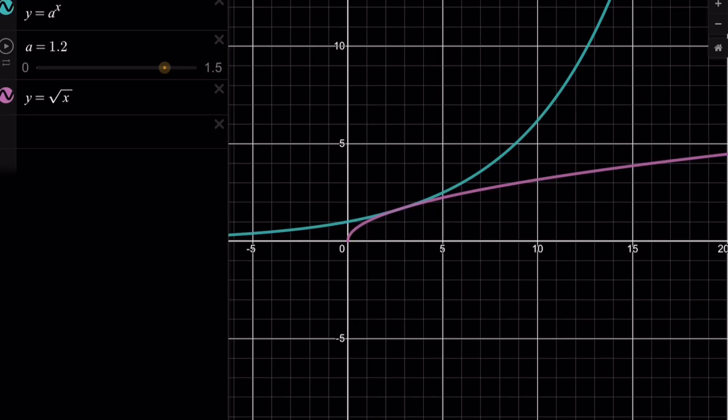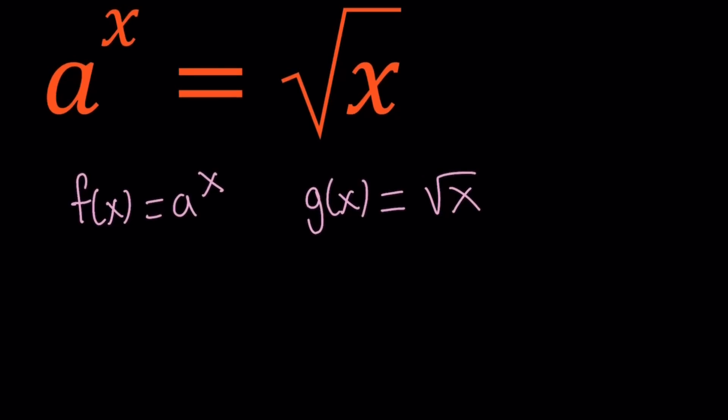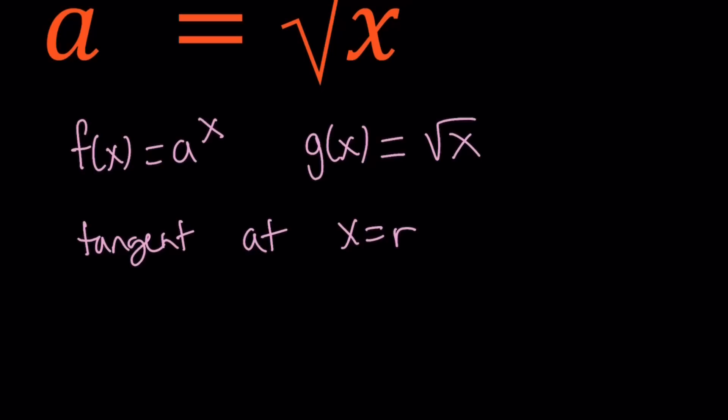So let's go back to the problem and see how we can find the point of tangency. So here, we have these two functions, and let's say they are tangent at x equals r. r is for root. So that means f of r equals g of r, because the functions are going to intersect at that point. And f of r is a to the power r, g of r is square root of r. So that's our first equation.